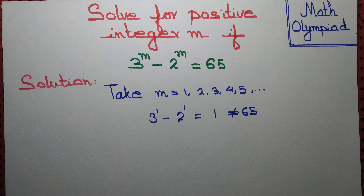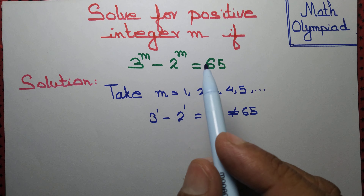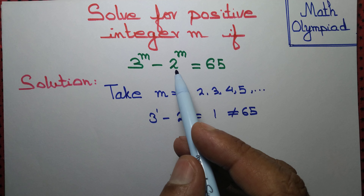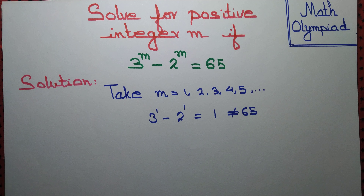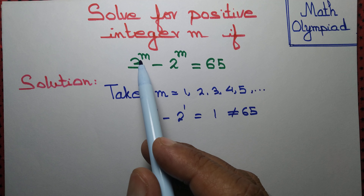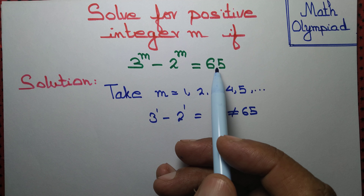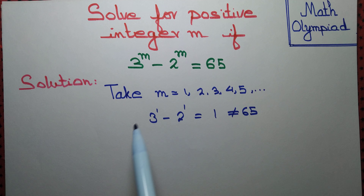What about m equal to 2? 3 squared is 9. 9 minus something cannot be equal to 65. What about m equal to 3? 3 cubed is 27. 27 is smaller than 65, so the difference will not be equal to 65.